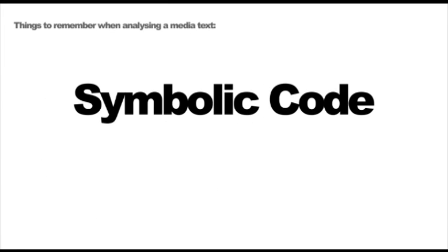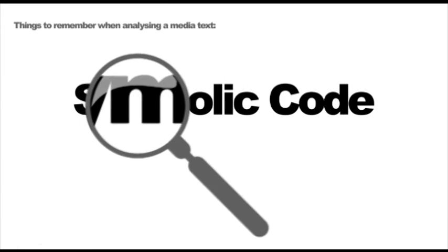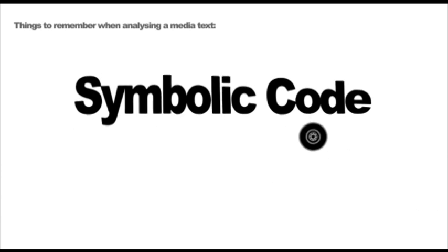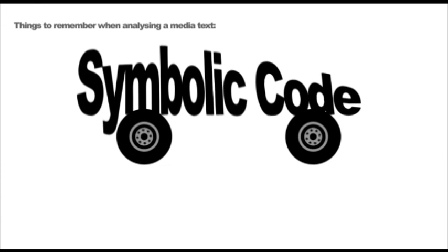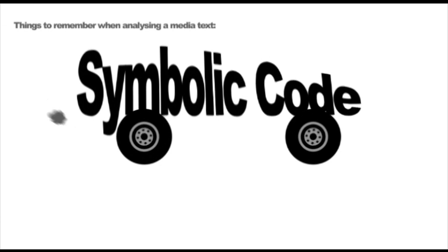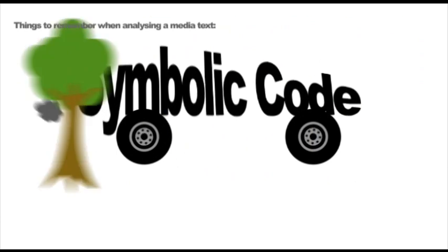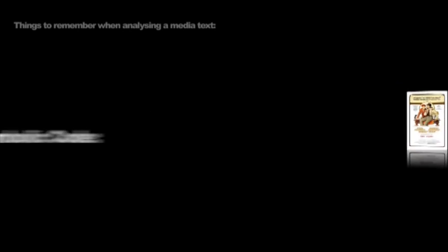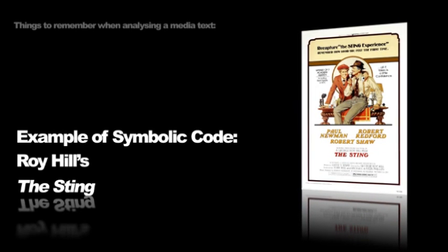Symbolic codes. Symbolic codes are like clues within the narrative. For example, one of the characters may drive a broken down old car, suggesting perhaps the character is poor. A good example of this is Vertigo.